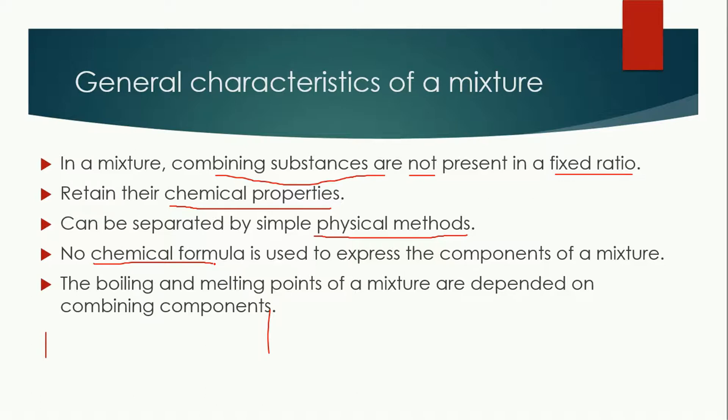The boiling point and melting points of mixtures are dependent on the combining components. Whatever the combining substances, the boiling points and melting points will depend on that. If the combining elements have high boiling and melting points, collectively the boiling point and melting point of the mixture will also increase.